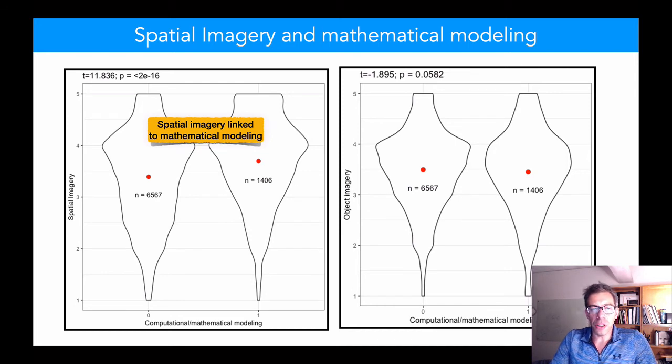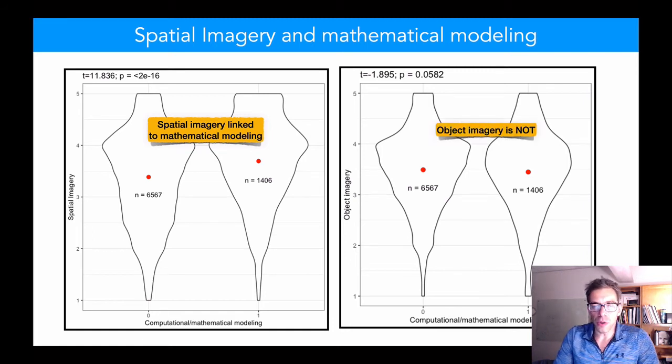Although spatial imagery and object imagery are moderately correlated in our sample band point three, it is spatial imagery specifically and not object imagery that's associated with both the use of computational models and endorsement of their importance.